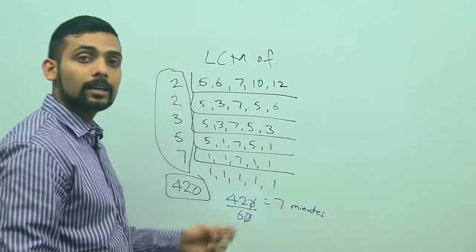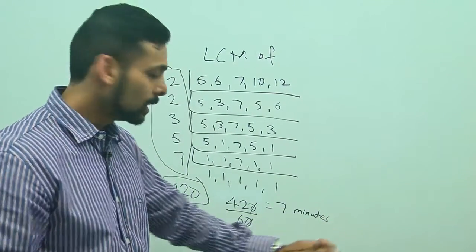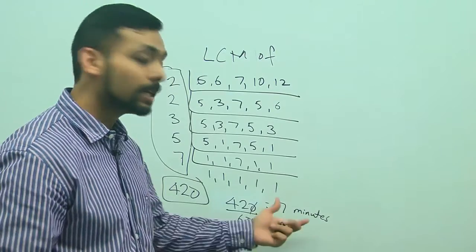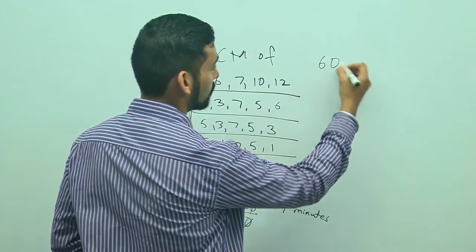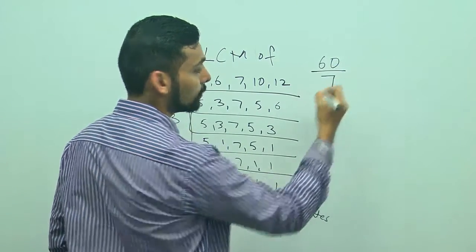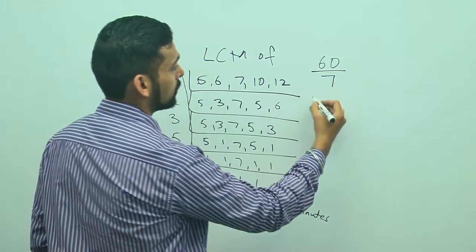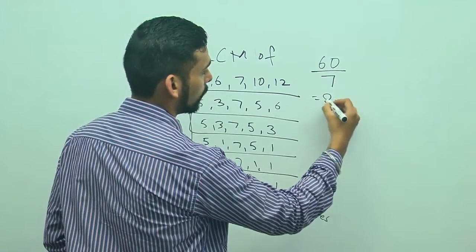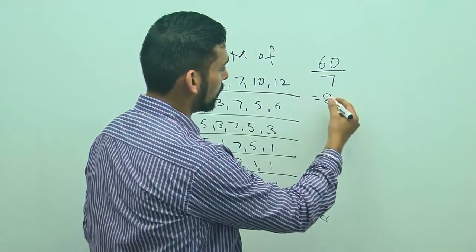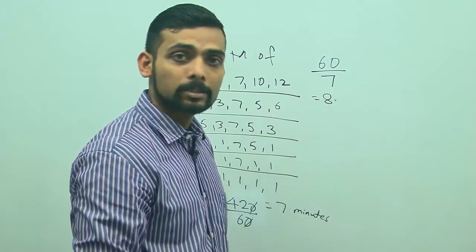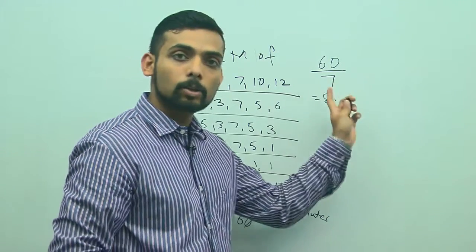So the bells toll together every 7 minutes, and how many 7 minute intervals are there in 1 hour? There are 60 minutes in 1 hour and the bells are tolling together every 7 minutes. 7 goes into 60 eight point something, but I am not concerned with the part after decimal because the 9th toll together will be after 1 hour.